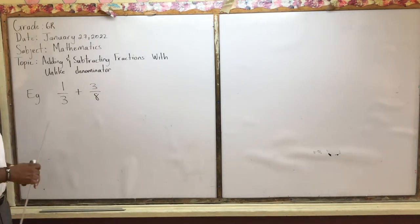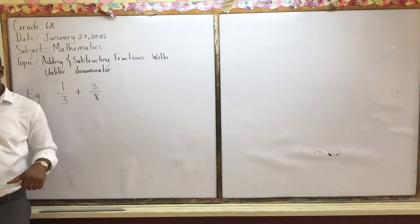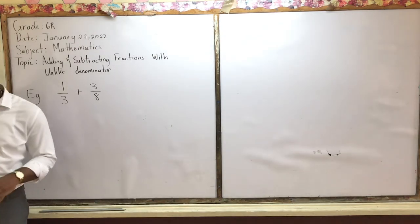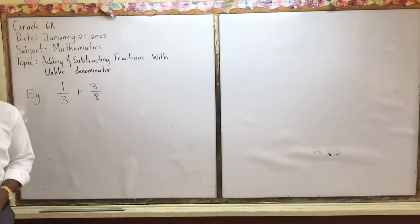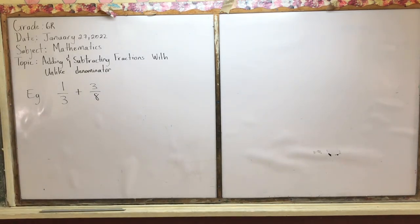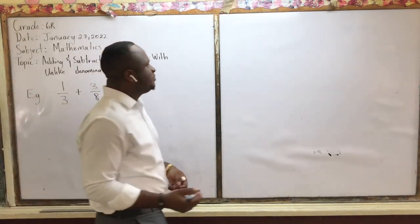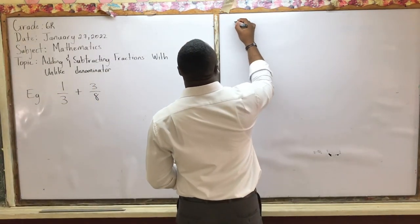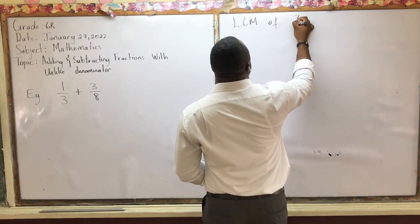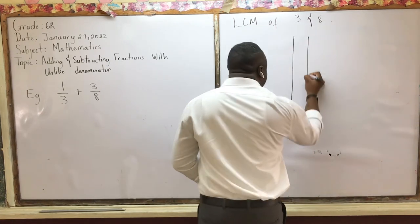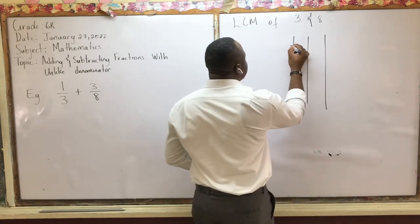Since we have unlike denominators, we can't simply add these fractions. We have to find a way to make the denominators alike. As we discussed before, we can find the LCM of the two denominators. So we have to first find the LCM of three and eight. Let's draw the divisor table to find the LCM.